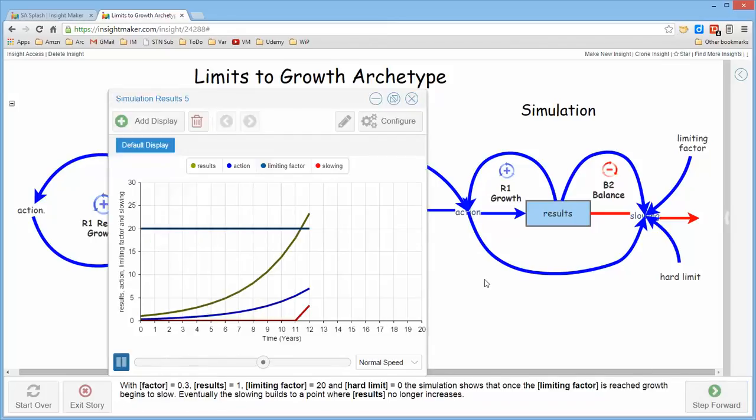So if we simulate this with a soft limit though hard limit equals zero, this action factor is 0.3 and the results start out as one and the limiting factor is 20. Notice that the result of this structure produces the characteristic exponential growth curve until it gets to a point where it reaches the value of the limiting factor.